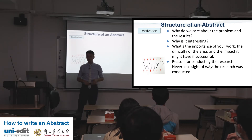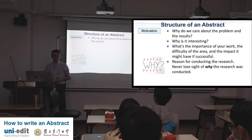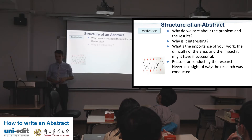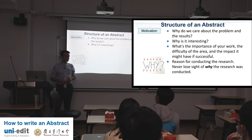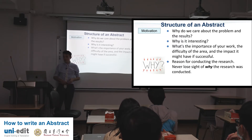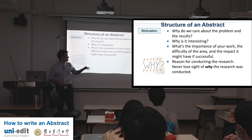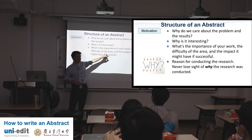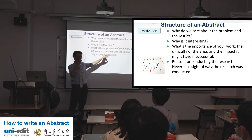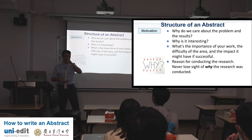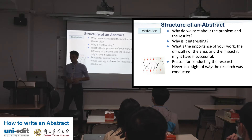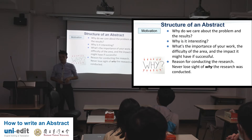This is the structure of an abstract in more detail. Motivation: why do we care about the problem and the results? Why is it interesting? This is a sales piece — why should I be interested? What's the importance of your work? The difficulty of the area and the impact it might have if successful. Reasons for conducting the research — never lose sight of why the research was conducted.